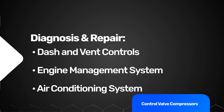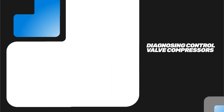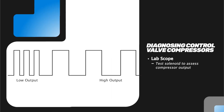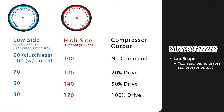Diagnosis and repair for a system with a control valve compressor can be divided into three general areas. A lab scope will allow you to test the solenoid's pulse width modulated signal, using pressure to assess variable output. This chart shows normal high and low pressure readings based on compressor output.